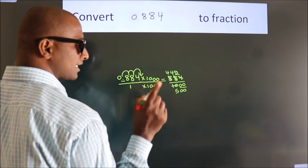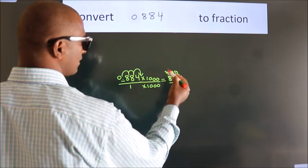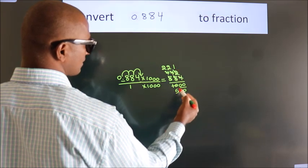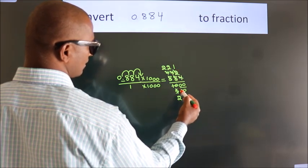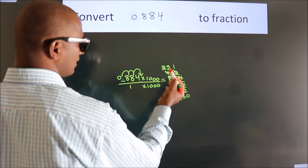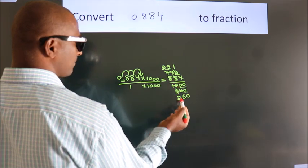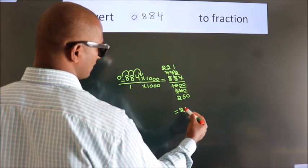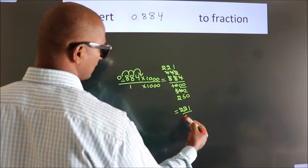I cancel with 2 again. 2 twos 4, 2 twos 4, 2 ones 2, 2 twos 4, 2 fives 10. These zeros as it is down. Further cannot be simplified. So our fraction is 221 by 250.